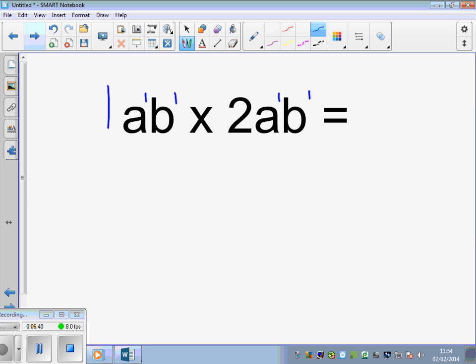Multiplying our coefficients, 1 multiplied by 2 is 2. And we add our powers. A to the 1, A to the 1, gives A squared. B to the 1 times B to the 1, B squared. Which gives us our answer: 2a squared b squared.